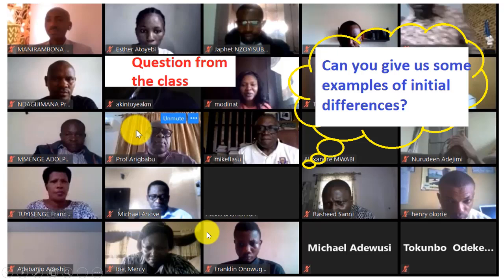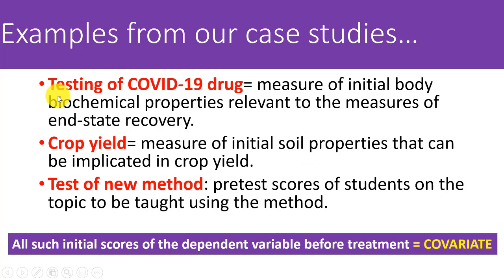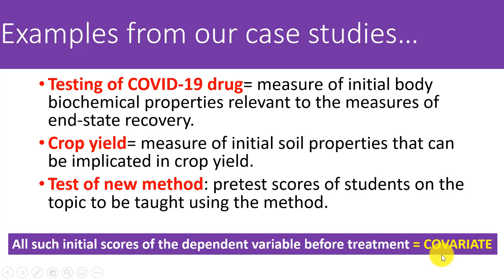A student asks: can you give examples of initial differences? For the COVID-19 drug test, we need to have measured initial body biochemical properties relevant to end-state recovery. For crop yield, we need the initial soil properties. For the new teaching method, we conduct pre-test scores of students on the topic to be taught. All such initial scores of the dependent variable before treatment — we call these the covariates.